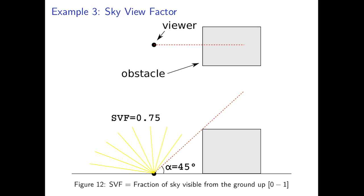In this illustration we see the queried point and we have a single obstacle shown in grey, positioned in such a way that the angle is equal to 45 degrees. In this particular case sky view factor is equal to 0.75, since three-fourths of the sky are visible for the viewer.